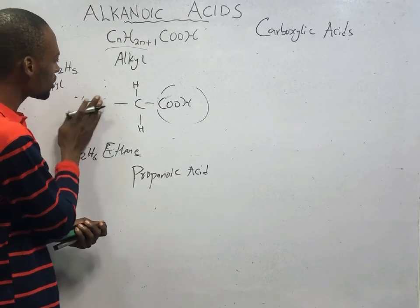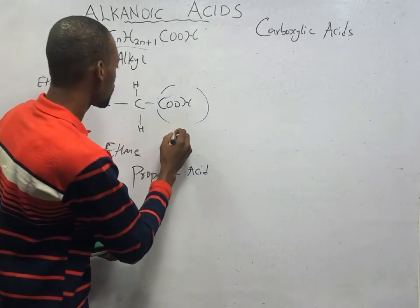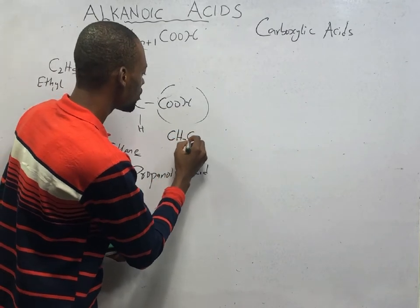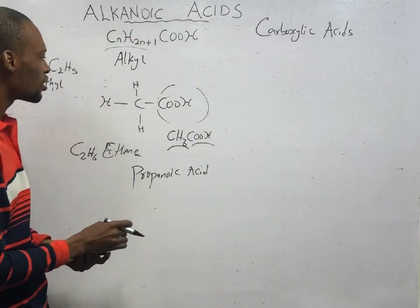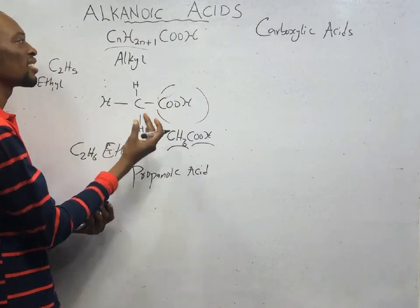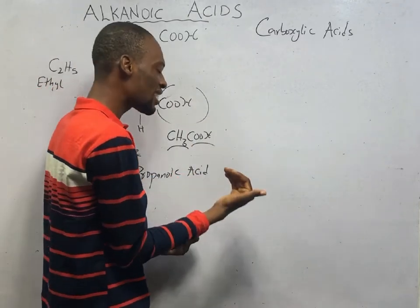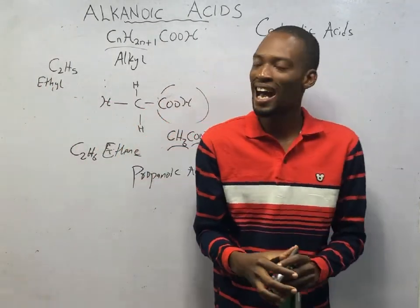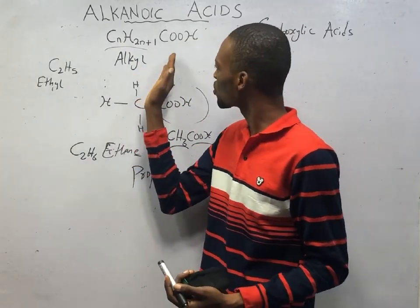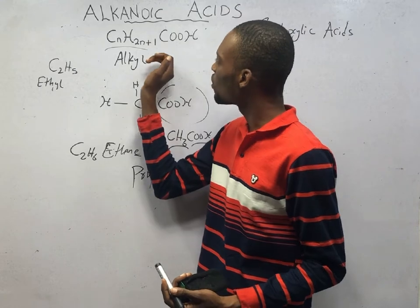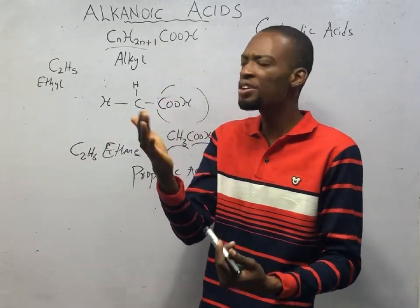If you reduce the alkyl chain to just one hydrogen — CH₃COOH — that is the alkyl group plus the carboxyl group, giving you ethanoic acid. Alkanoic acids or carboxylic acids are organic acids with the general formula CₙH₂ₙ₊₁COOH, where the alkyl group can be short, long, or very long.